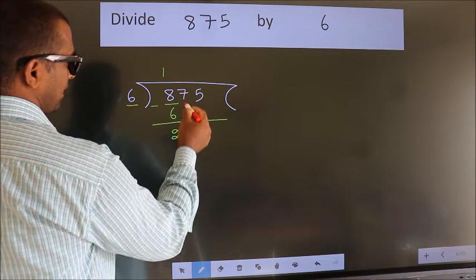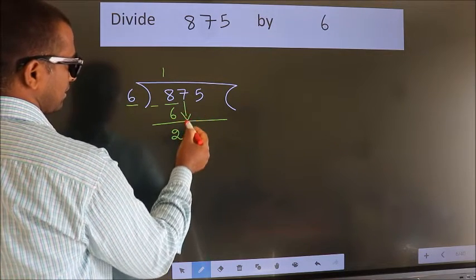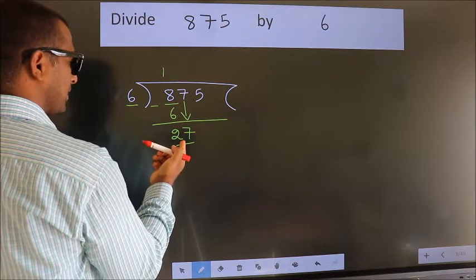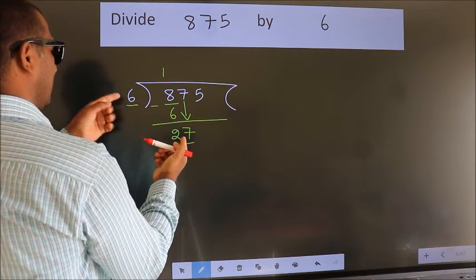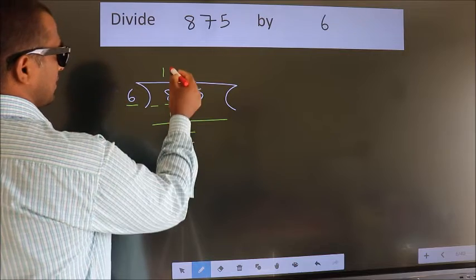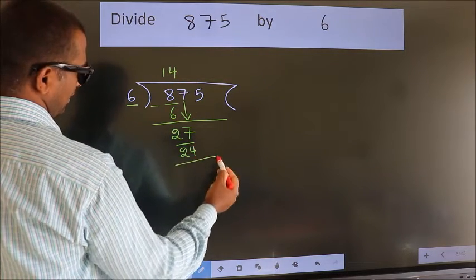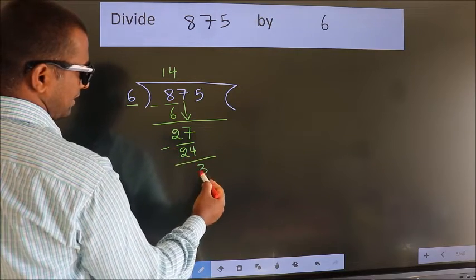After this, bring down the beside number. So, 7 down. So, 27. A number close to 27 in 6 table is 6 fours 24. Now, we subtract. We get 3.